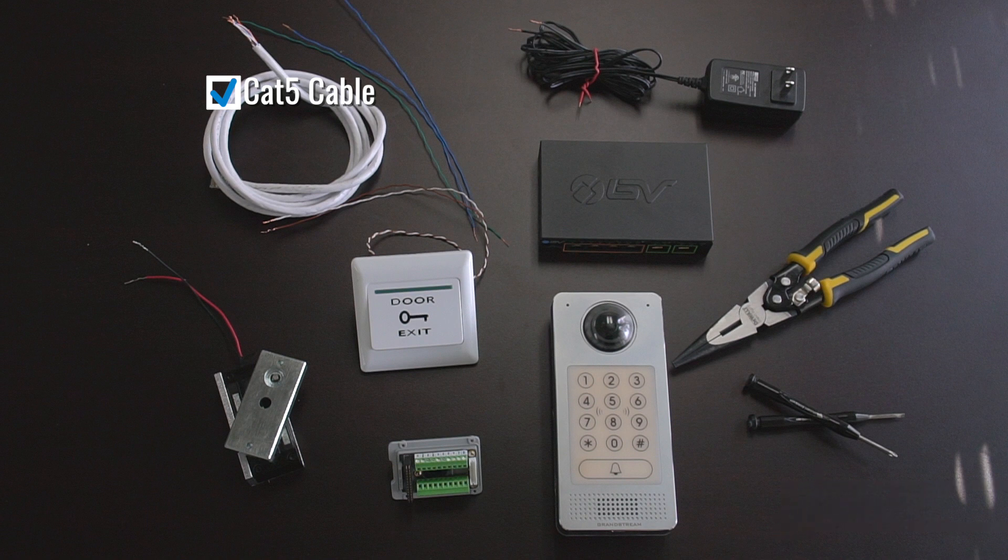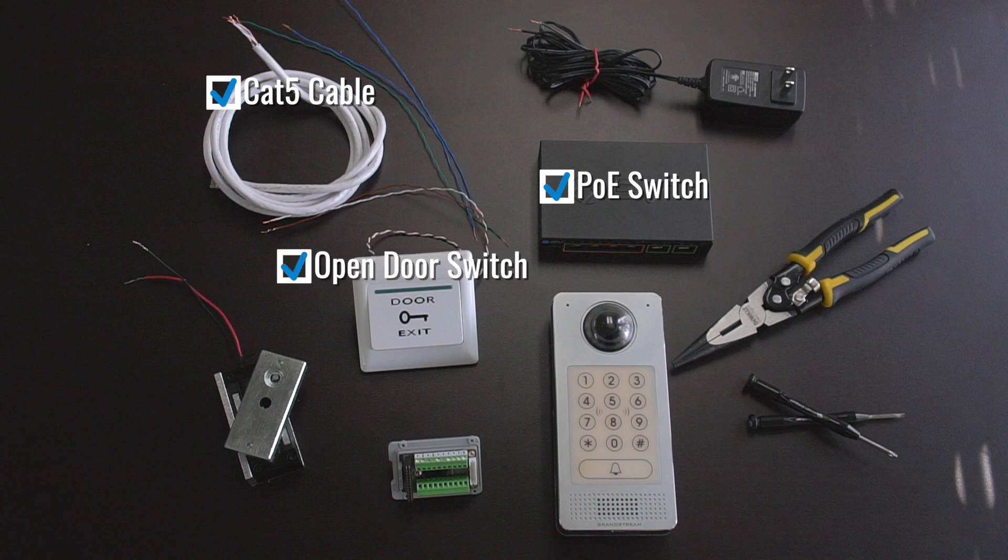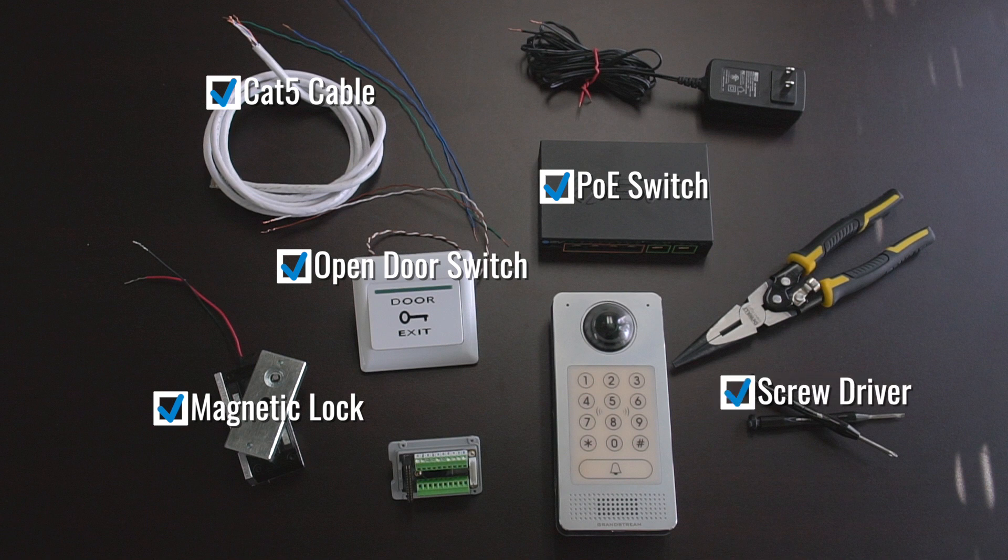We'll also need a PoE switch or something at least with power, an open door switch or just any type of common switch, and a door lock. This could be a magna lock or any type of conventional locking system. We're going to need a Phillips and a slot head screwdriver. Last but not least, definitely a GDS and a power supply to power the magna lock.